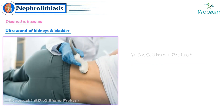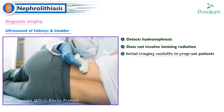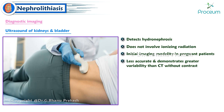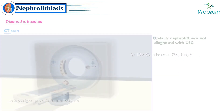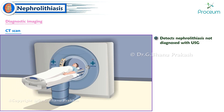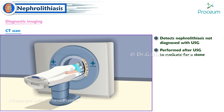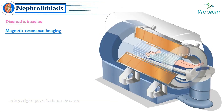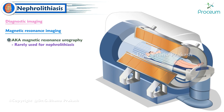Ultrasound of the kidneys and bladder reliably detects hydronephrosis and involves no ionizing radiation; it is the preferred initial imaging modality in pregnant patients. However, ultrasound is less accurate than CT for diagnosing nephrolithiasis, measuring stone size, and defining ureteral location. A positive ultrasound often leads to follow-up CT for treatment planning. MRI (magnetic resonance urography) is rarely used for nephrolithiasis.